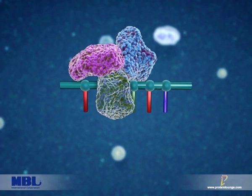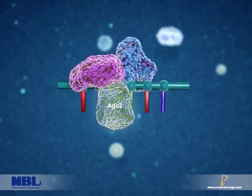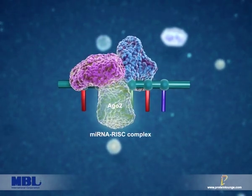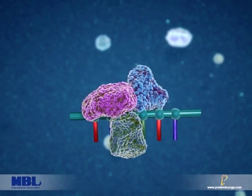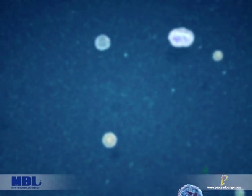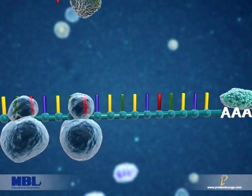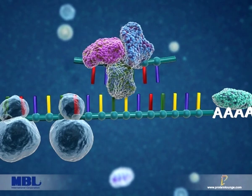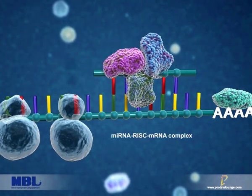The RISC complex containing AGO2 protein binds to microRNAs. The microRNA-RISC complex then binds to the target mRNA at the complementary regions.